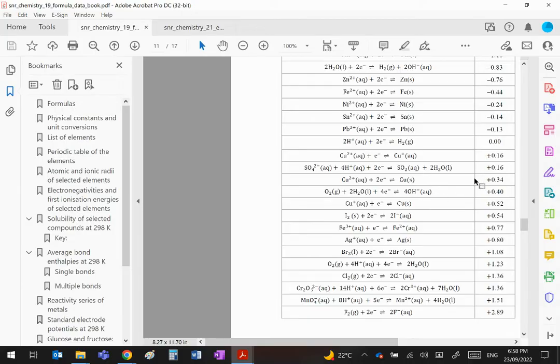The one you have to reverse is always the one above because by reversing the copper you will get a value of minus 0.34, and by keeping this going forwards you'll get plus 1.51. The overall will give you a positive value and that means it is spontaneous. I tell mine to use what I call the anti-clockwise rule: the upper one goes backwards, the lower one goes forwards, anti-clockwise.